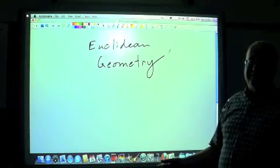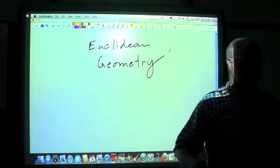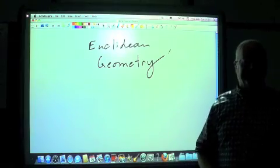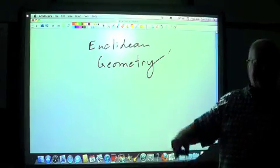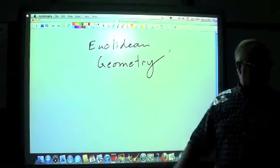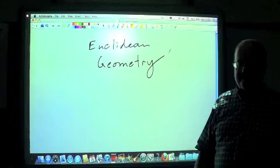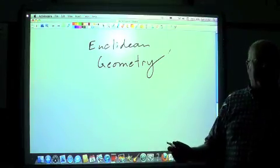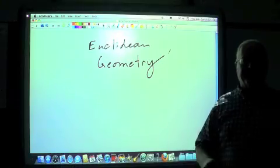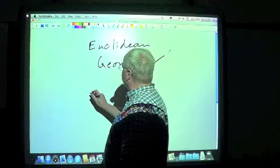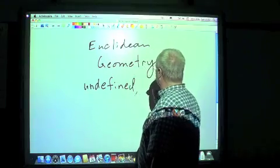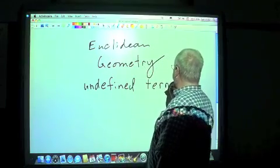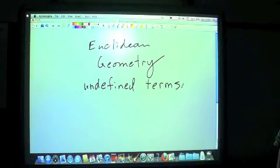It's sort of like your best friend — you know them when you see them, you can describe them, but defining them precisely is hard. So the concept is you can describe what it is and what it is not. We're going to look at this as the basis of undefined terms. There are three undefined terms that we base everything on.